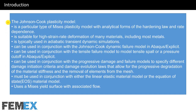The Johnson Cook Plasticity Model is a particular type of Mises plasticity model with analytical forms of the hardening law and rate dependence. It is suitable for high strain rate deformation of many materials, including most metals. It is typically used in adiabatic transient dynamic simulations. It can be used in conjunction with the Johnson Cook Dynamic Failure Model in ABAQUS Explicit.